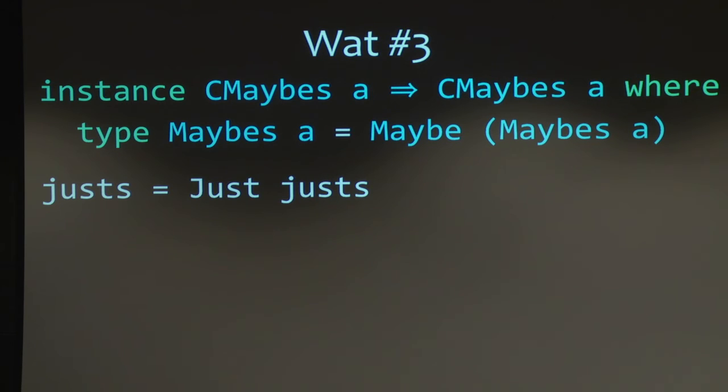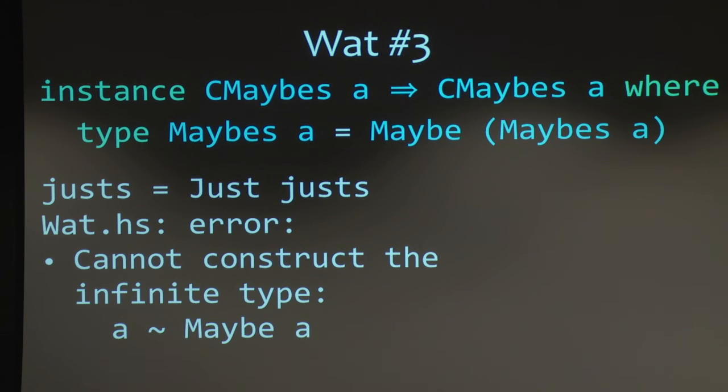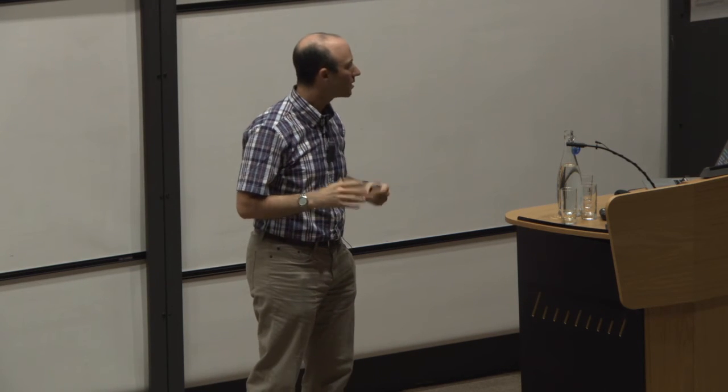So under constrained type families, now, now it's in an instance of some c maybes. And this instance has to depend on itself to be able to use maybes a on the right hand side there. Because of that dependency, we won't ever be able to satisfy this constraint. And so indeed, GHC is now correct in rejecting my justs, because it's not going to quantify over an impossible constraint. And so now it still rejects this, that's good. But rejecting this is the correct behavior.